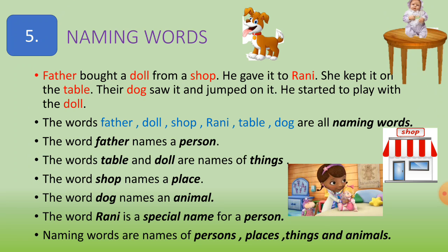In this story, the words father, doll, shop, Rani, table, and dog are all naming words. The word 'father' names a person. The words 'table' and 'doll' are names of things. The word 'shop' names a place. The word 'dog' names an animal. The word 'Rani' is a special name for a person. Naming words are names of persons, places, things, and animals.